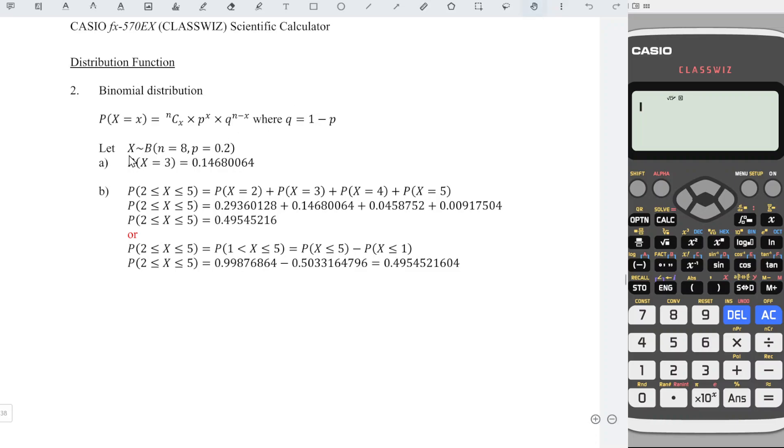Consider the random variable x follows binomial distribution with n equal to 8 and p equal to 0.2. Here, determine the probability for x is equal to 3.